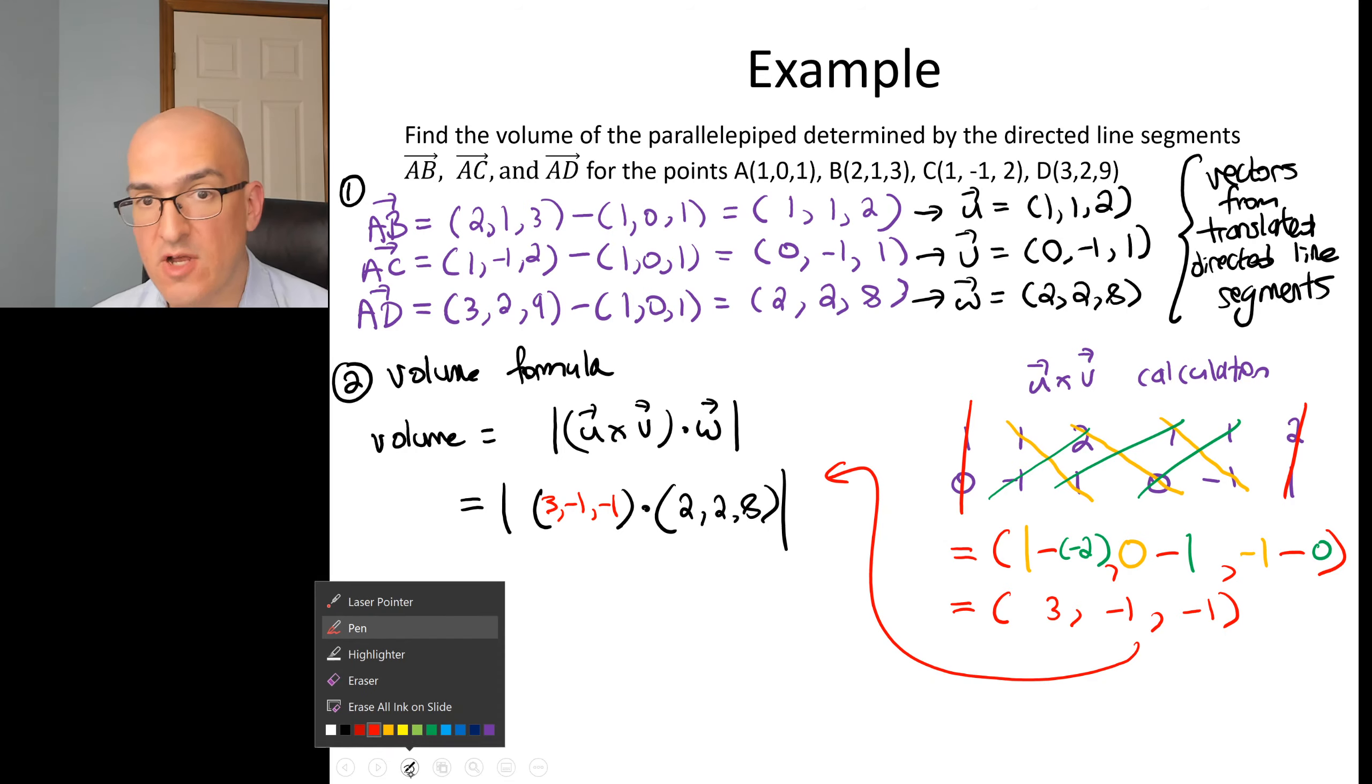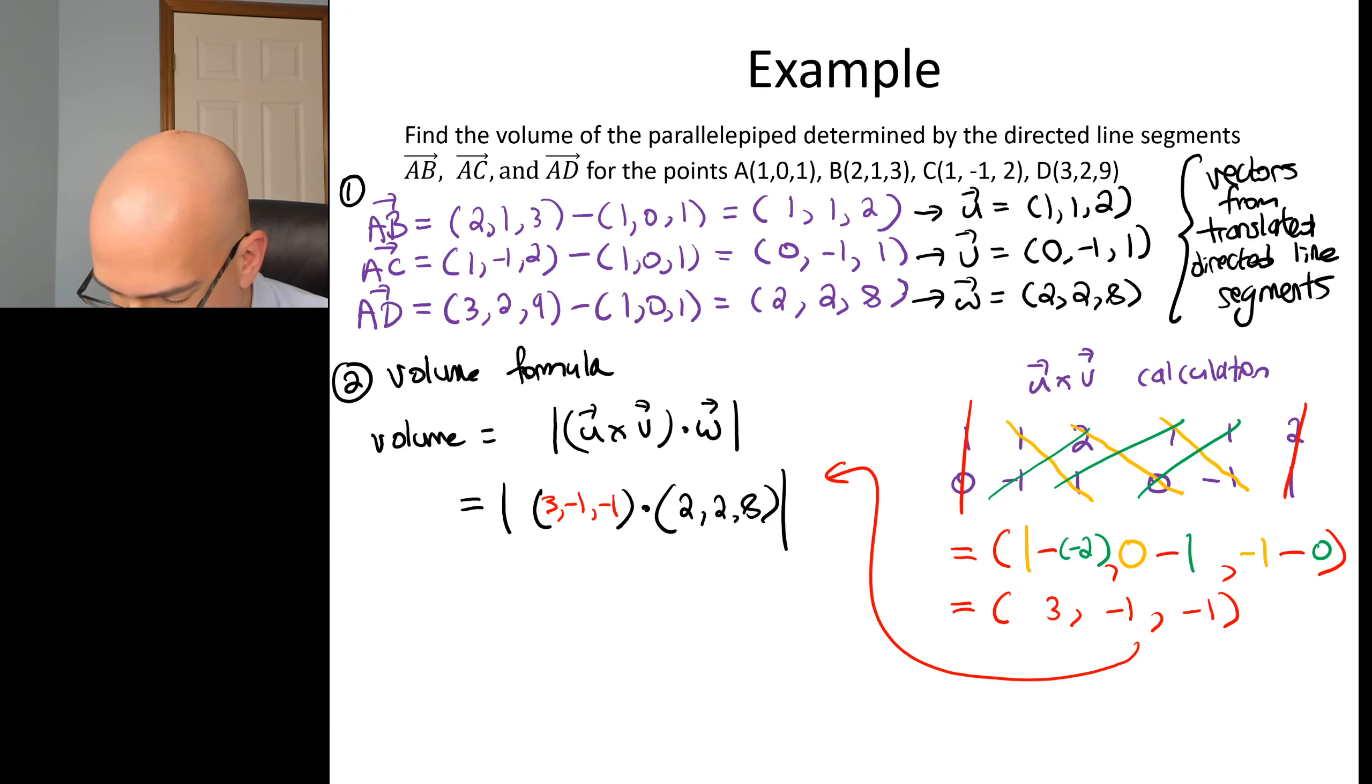Okay, now we can do that dot product. So absolute value of 3 times 2, 6. Negative 1 times 2 minus 2. Negative 1 times 8 minus 8. So we have absolute value of negative 4. It's a good thing we have those absolute values there. Because if we didn't have them, we would say the volume was negative 4. Like negative 4 liters of popcorn. Negative 4 gallons of water. Doesn't make any sense. You can't have a negative volume usually. Equals 4. So when I do that usually thing, there's weird stuff in physics sometimes. Negative masses and stuff. Negative pressure. Okay, so that's our answer. The volume of this shape is 4. And whatever the units are. And we won't talk about units.